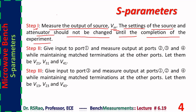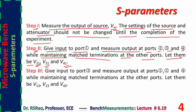The source may be a reflex klystron or an oscillator. Its output should be measured and the settings of the source and attenuator should not be changed until the completion of the experiment. Step two: give input to port one and measure the output at ports two, three, and four, while maintaining matched terminations at other ports. Let these voltages be V₂₁, V₃₁, and V₄₁.